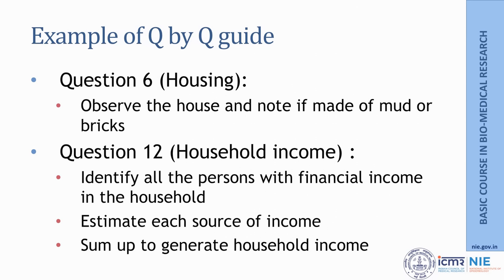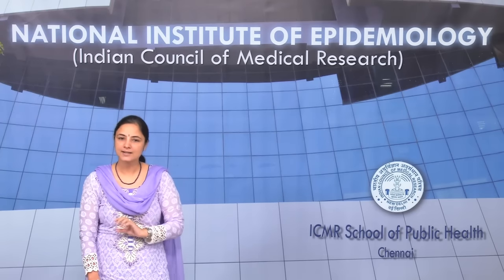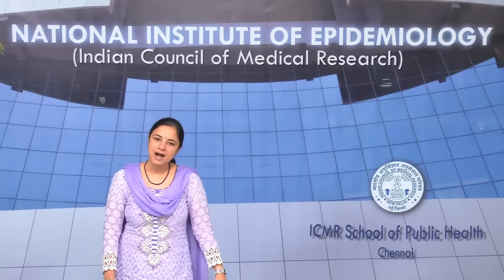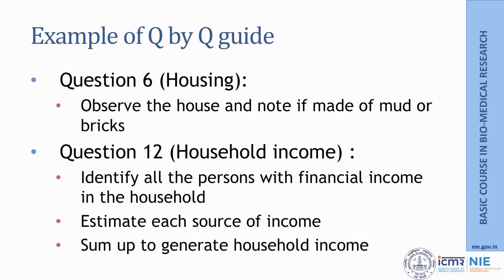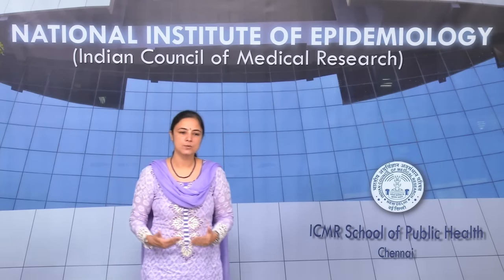For example, if you have a question on the type of house — kaccha, semi-paka, or paka — not everyone may understand these terms, so you add an explanation: observe the house and note if it is made of mud or bricks; if mud, mark it as kaccha. For household income, instruct investigators to first find how many earning members are in the family, determine each member's monthly income, add up all amounts, and record the total household income.